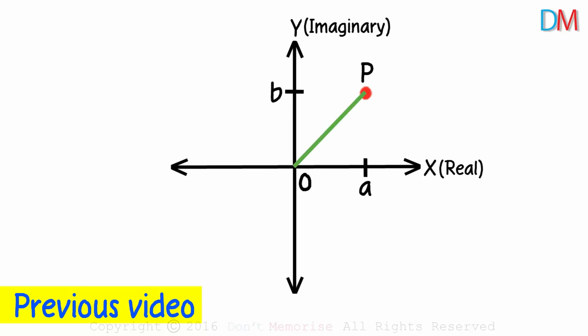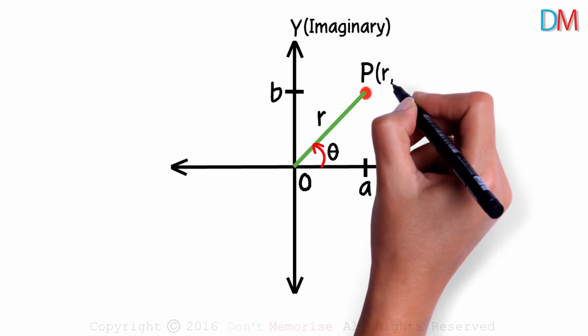Let's quickly recap what we saw in the previous video. A complex number can be plotted in two ways. First, a units to the right and b units up. Assume that this length OP is r units, and this angle from the positive x-axis is theta. So the second way to represent point P is r, theta.